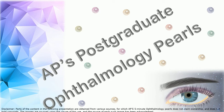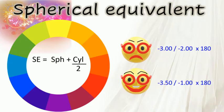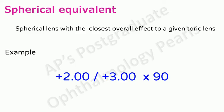Hello viewers, welcome to AP's Postgraduate Ophthalmology Pulse. Today we will talk about the spherical equivalent of toric prescriptions. The easiest definition of the spherical equivalent is the spherical lens with the closest overall effect to a given toric lens.